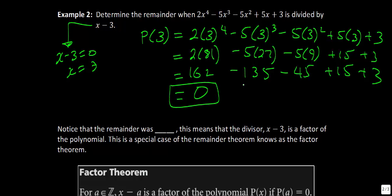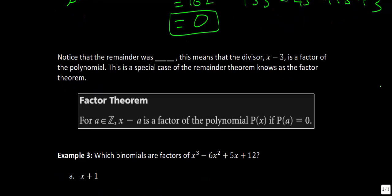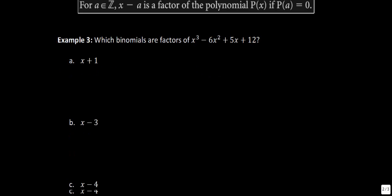This remainder of 0 is interesting, because what it means is that x minus 3, our divisor, is a factor of our polynomial. That wasn't the case for the other questions that had a remainder. Think of it like this: 2 goes into 16 exactly 8 times with no remainder, whereas 2 does not go into 15 without a remainder. So this is known as the Factor Theorem: whenever the remainder is 0, we know the divisor must be a factor.